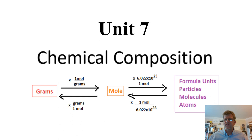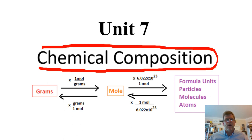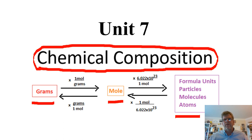That finishes us off with unit six, and we're going to move into unit seven now. This is going to take a turn — we're going to get back heavily into calculation and dimensional analysis. The title of this chapter is chemical composition. Ultimately, we're going to be looking at amounts of an element, compound, or sample of matter and converting between those different amounts. We'll introduce the concept of the mole and how we get from grams of a sample to moles of that matter and even to the number of particles.